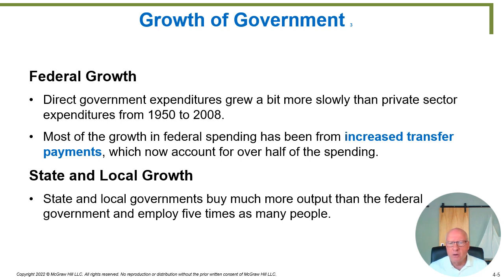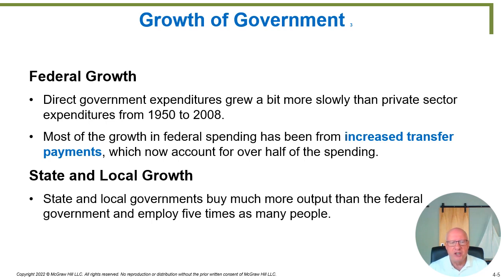At the state and local level, state and local governments buy a lot more output than the federal government, because the federal government mostly buys military goods and employs National Park Service Rangers and a few others. The federal government is nowhere near as large as all 50 state governments combined, because states provide K-12 education, roads, and a whole bunch of other things. So state and local government is much larger in total than the federal government.